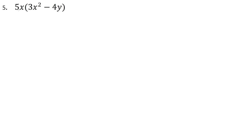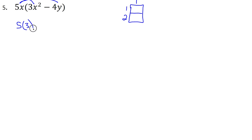In example 5 we have a monomial times a binomial. Whenever you have a product involving anything more than a monomial, you have to remember to distribute — so this 5x is going to multiply through. When taking a product you can think of it as a grid. The 5x represents 1 column since it's a monomial, and the binomial expression represents the rows, so we have 2.